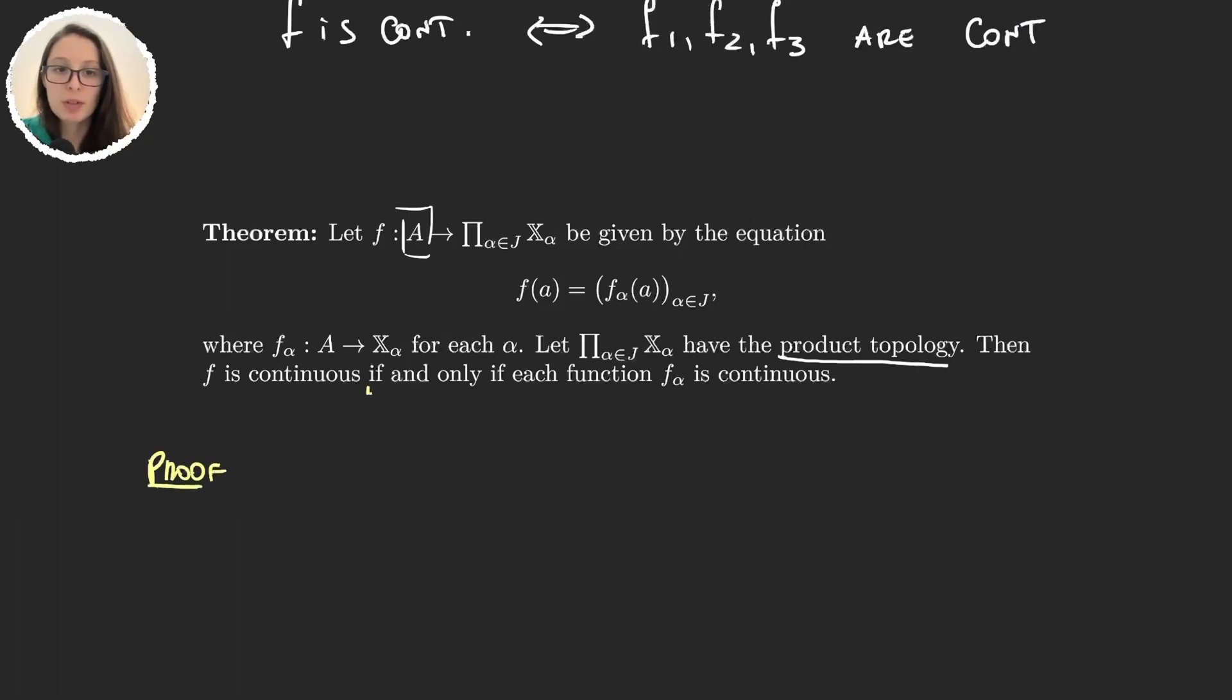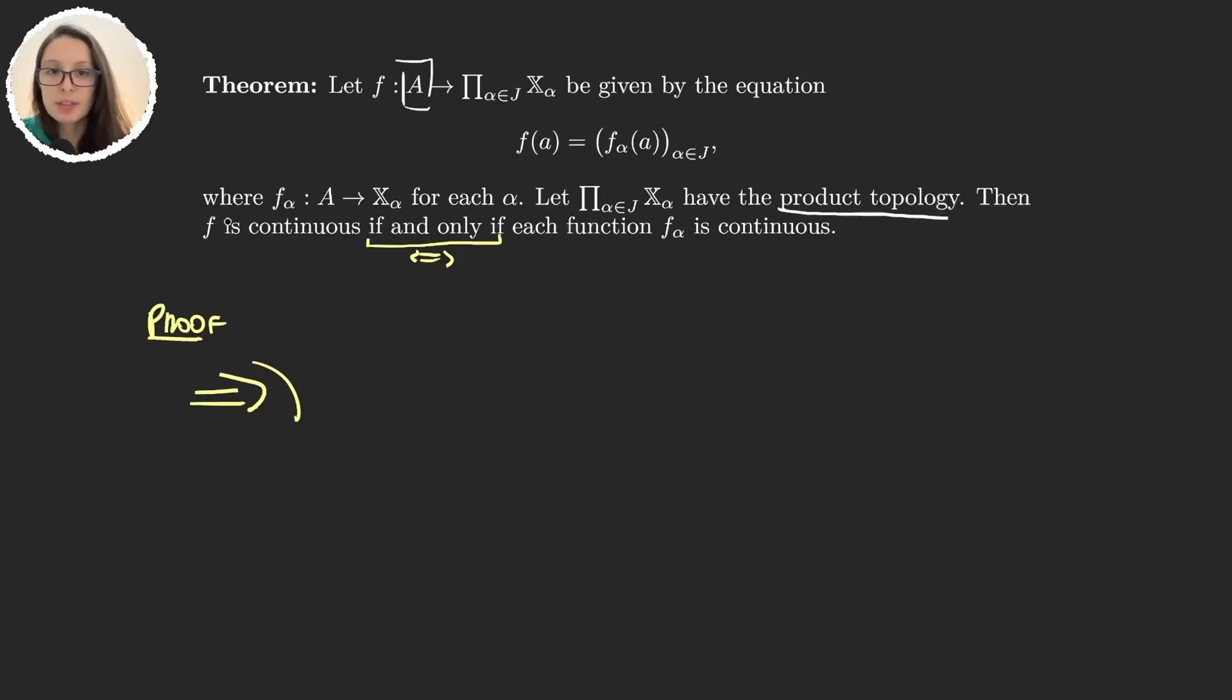So the theorem says if and only if, that implies that we have to prove both directions. So let's start with this one, this one is almost trivial. We have that f is continuous, and we want to prove that each coordinate is also continuous. But now f_α is the projection in the α coordinate composition of function. Now this one we know is continuous.